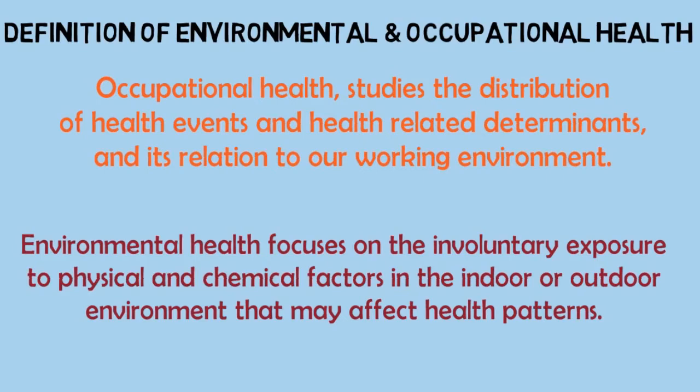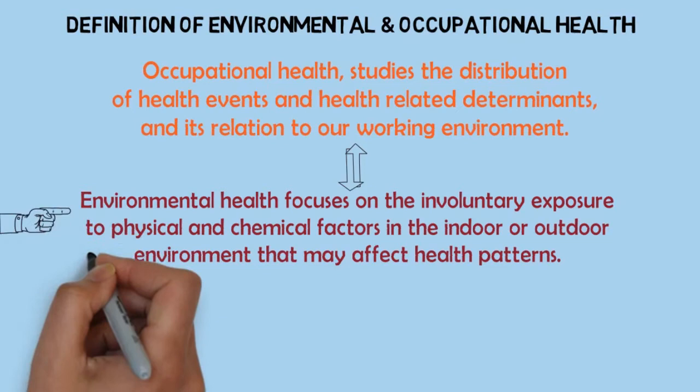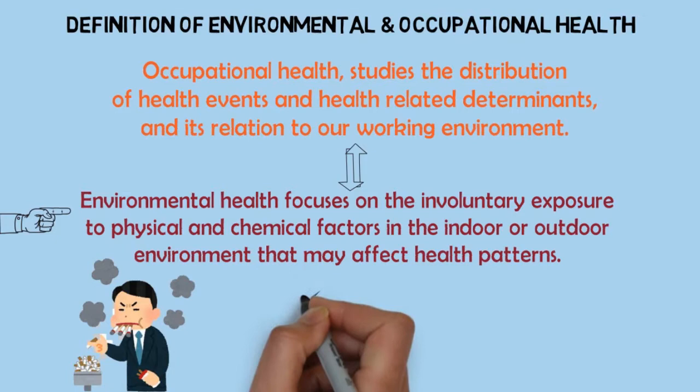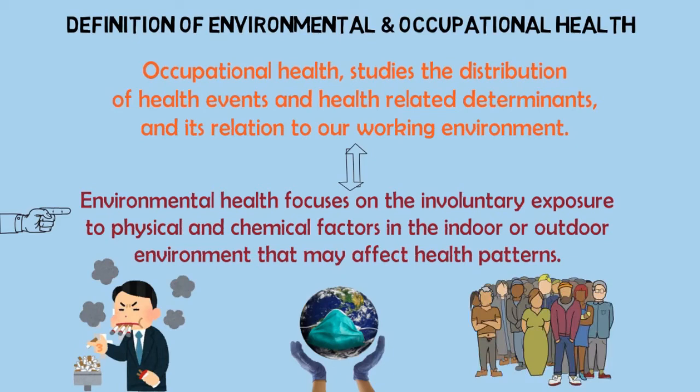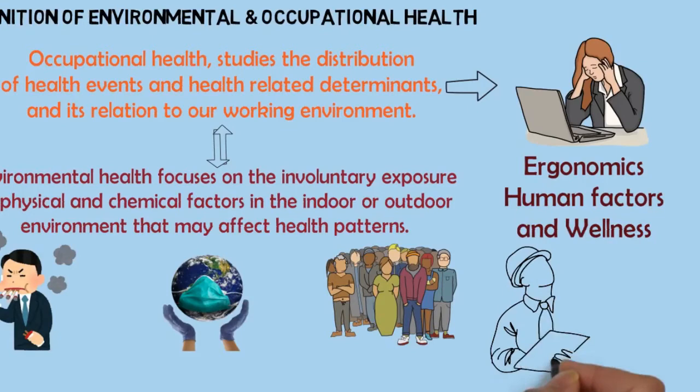Furthermore, the field of occupational and environmental health uses similar methods, although the conditions differ. Environmental health studies the health effects of exposure to specific environmental factors and considers the long-term impact of the ecosystem on nearby populations. While occupational safety evaluates and provides interventions to reduce the risk of injury and illness using ergonomics, human factors and wellness for future, current and past workers.